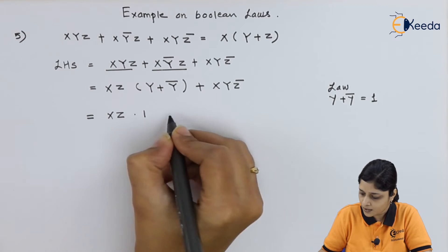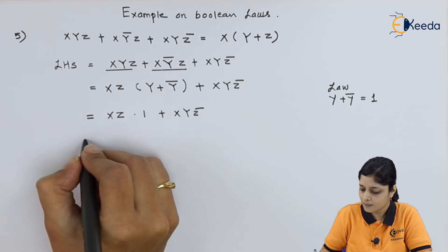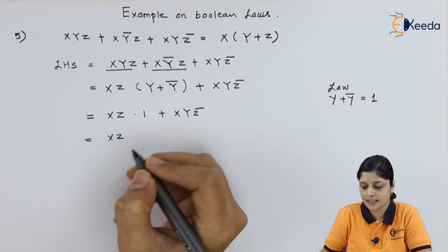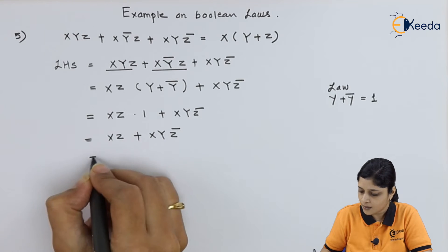xz dot 1 plus xyz bar. Again, xz dot 1 is xz plus xyz bar.